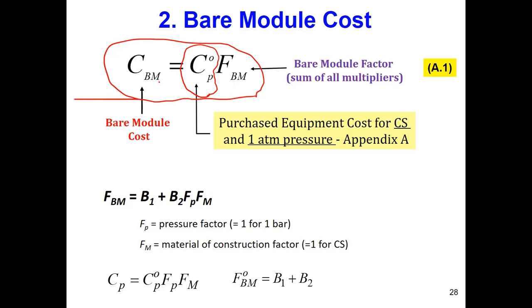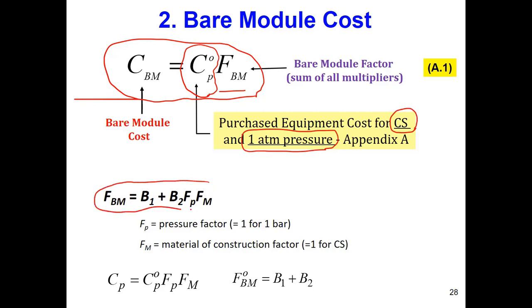For example, if I want a heat exchanger made of stainless steel working at 100 bars, I first find the price of that heat exchanger fabricated from carbon steel (CS) at one atmosphere, and then use the bare module factor FBM to correct for pressure and material of construction.